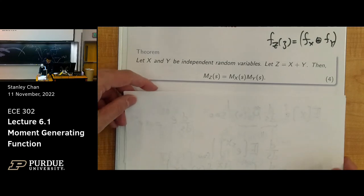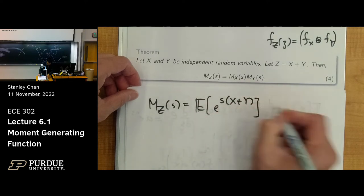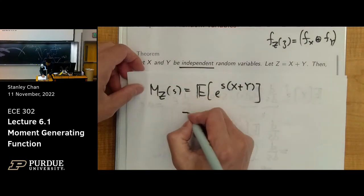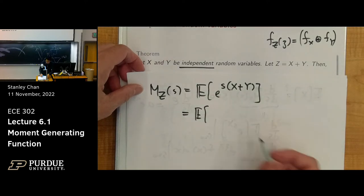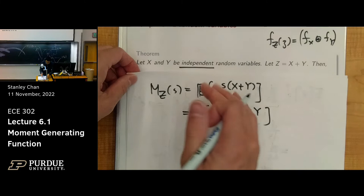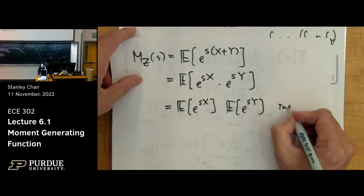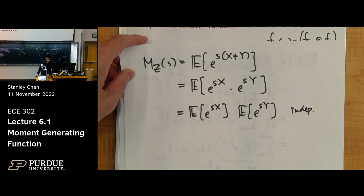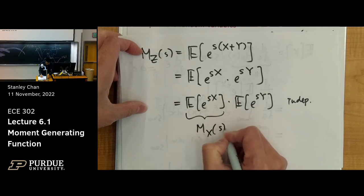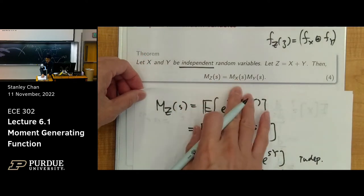The proof is easy. The MGF of Z is E[e^(s(X+Y))] = E[e^(sX) · e^(sY)]. Since X and Y are independent, this factors as E[e^(sX)] times E[e^(sY)] = MX(s) times MY(s). If they're not independent, you cannot factorize them. But since they're independent, you can. So the moment generating function of Z is written as the product of the two individual moment generating functions.